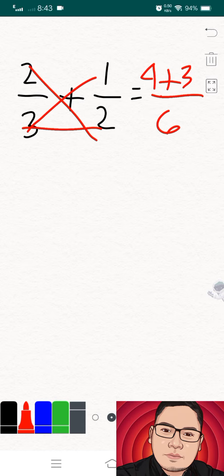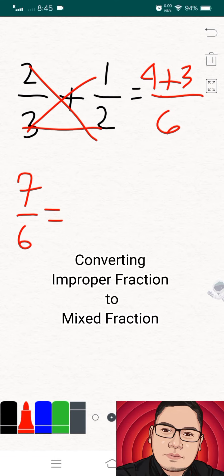Then after that one, we have to simplify our answer. So four plus three, that is seven over copy the denominator six. Now have you noticed that our answer is improper fraction, since our numerator is bigger than its denominator. So what can I do with this? Well, we have to convert this improper fraction into mixed fraction.